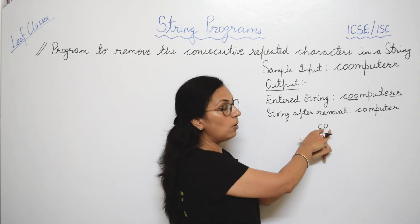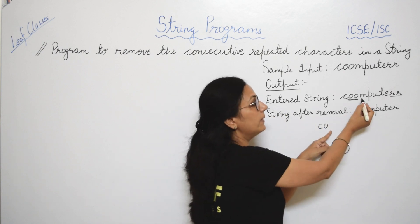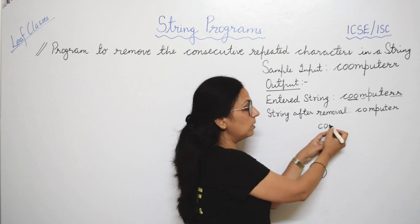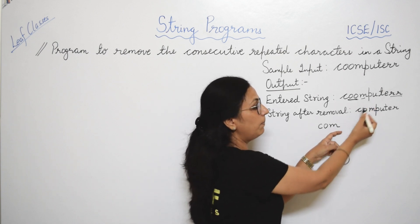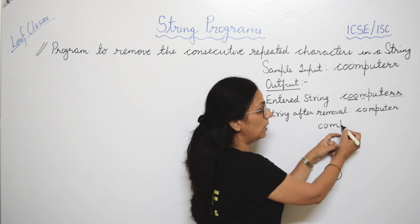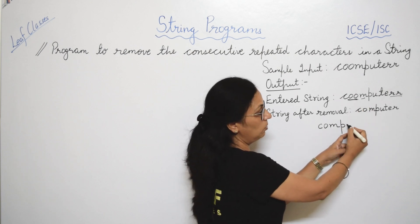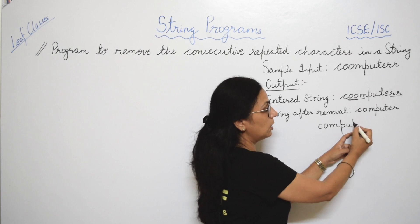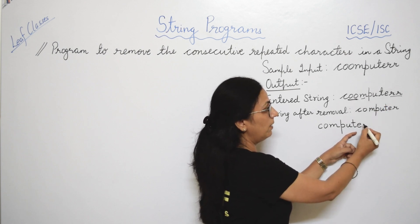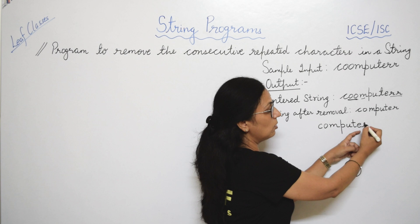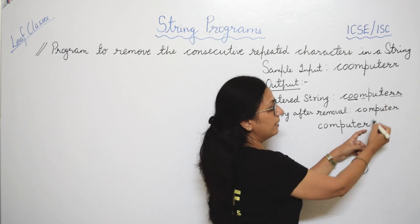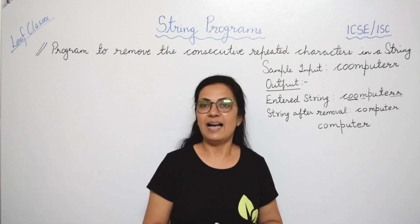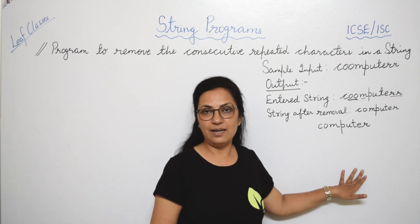Next character 'm' — 'o' is not equal to 'm', so we write 'm'. Then 'p': 'm' and 'p' are not equal, so we write 'p'. Continuing: 'u', 't', 'e' are all written. Then 'r' and 'r' — they are equal, so we will not write the second 'r'. The logic is clear.